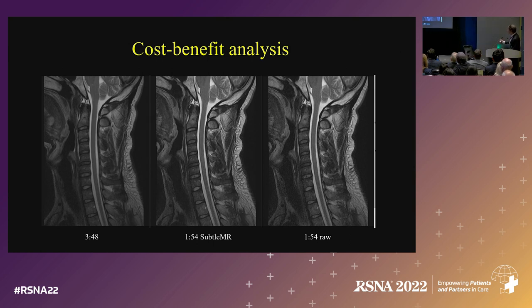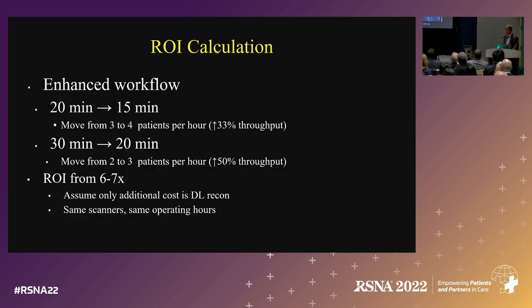This is what we aim at. This was the standard of care; this is the raw scan. When we process with SubtleMR, it is hard to argue that this scan in two minutes isn't better than that scan in almost four minutes. That is really the key point.